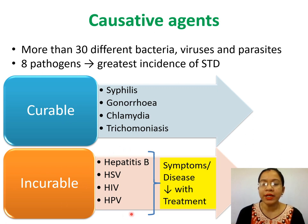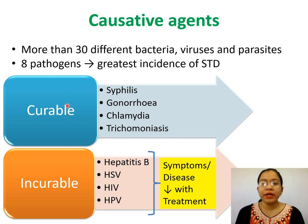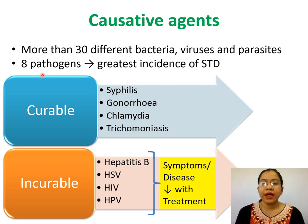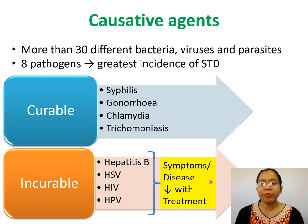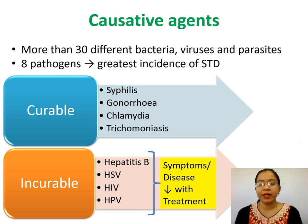The curable ones lead to syphilis, gonorrhea, chlamydia, or trichomoniasis. The four incurable pathogens are hepatitis B, herpes simplex virus, HIV, and human papillomavirus. However, if we provide treatment, even for those incurable ones, the symptoms of the disease may be decreased.